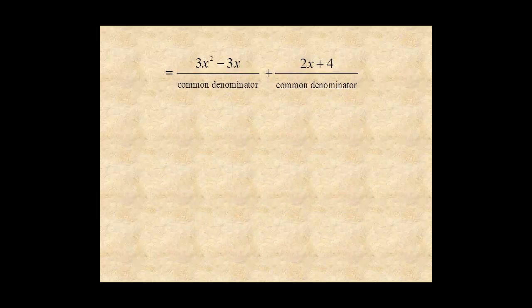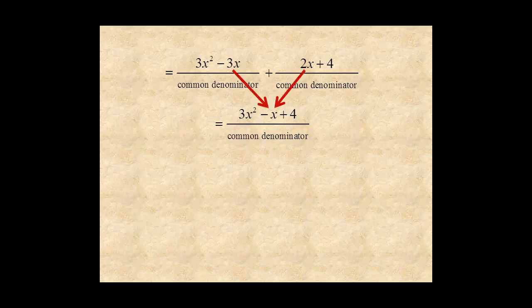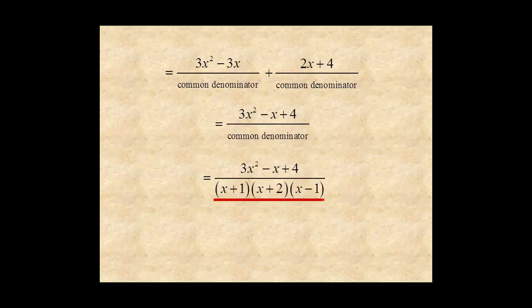Then add the numerators: 3x squared, negative 3x plus 2x for negative x, and plus 4. Then fill in the common denominator for the final answer.